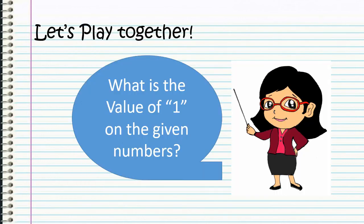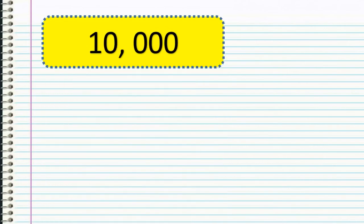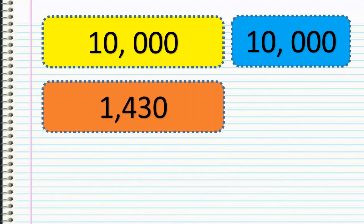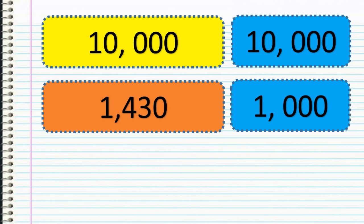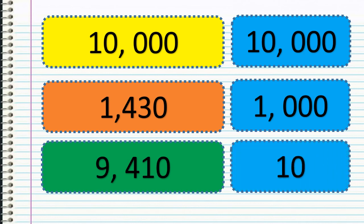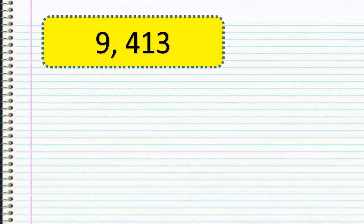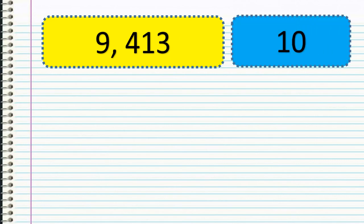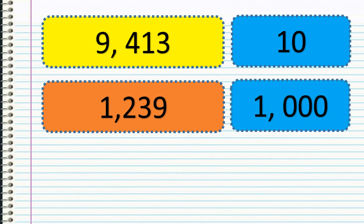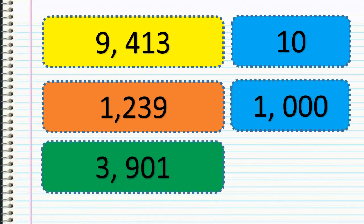Now let's try to find the value of 1 in the given numbers. What is the value of 1 in 10,000? It's also 10,000. What is the value of 1 in 1,430? The value is 1,000. How about in 9,410? The value of 1 is 10. How about in 9,413? The value of 1 is 10. How about in 1,239? The value of 1 is 1,000. Lastly, in 3,901, the value of 1 is 1.